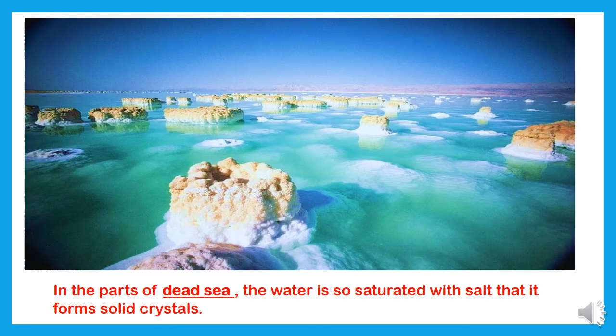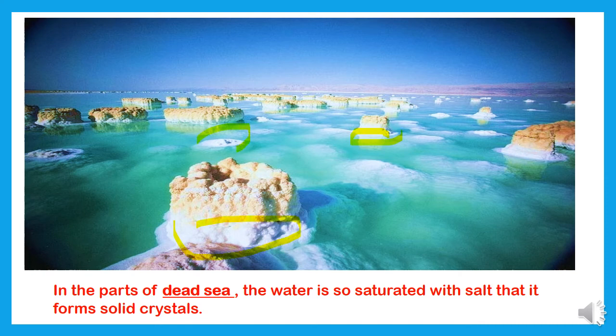Number five: as we discussed in our previous lecture — the Dead Sea. The Dead Sea means the amount of salt is so high that no one can sink in it. It is not alive; there are no plants or fish that exist there. The water is saturated with salt, and the salt exists in solid crystal form. As you can see, these are all solid crystals, which is why nothing sinks.